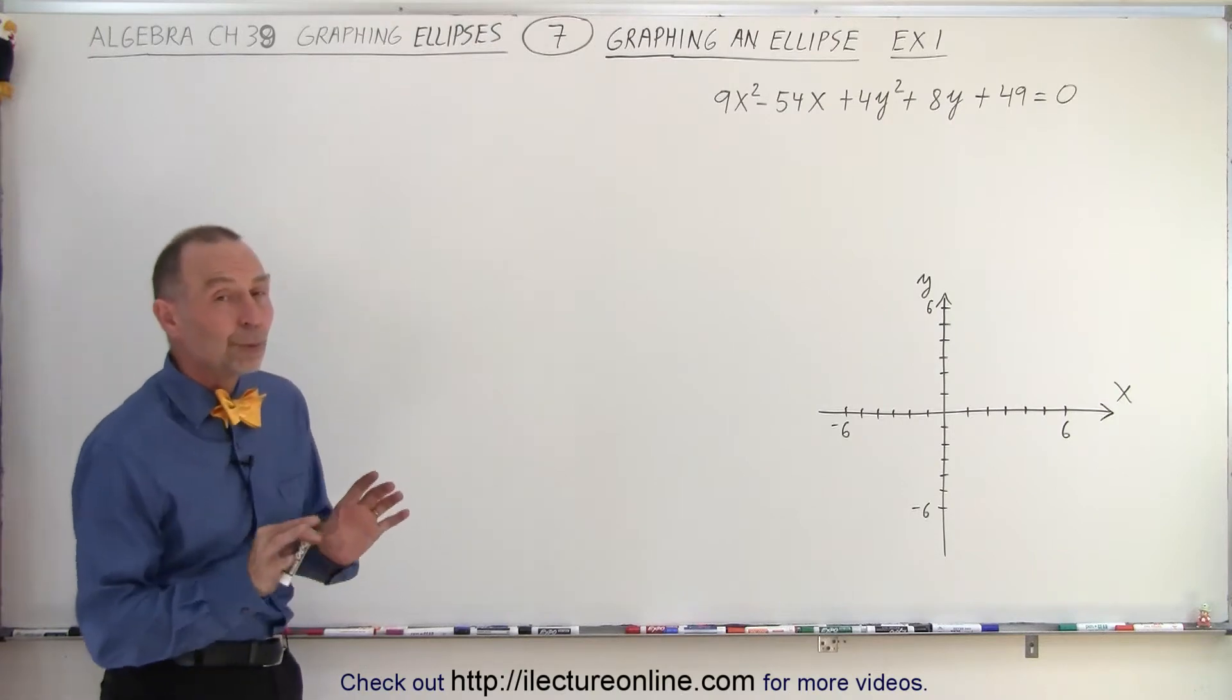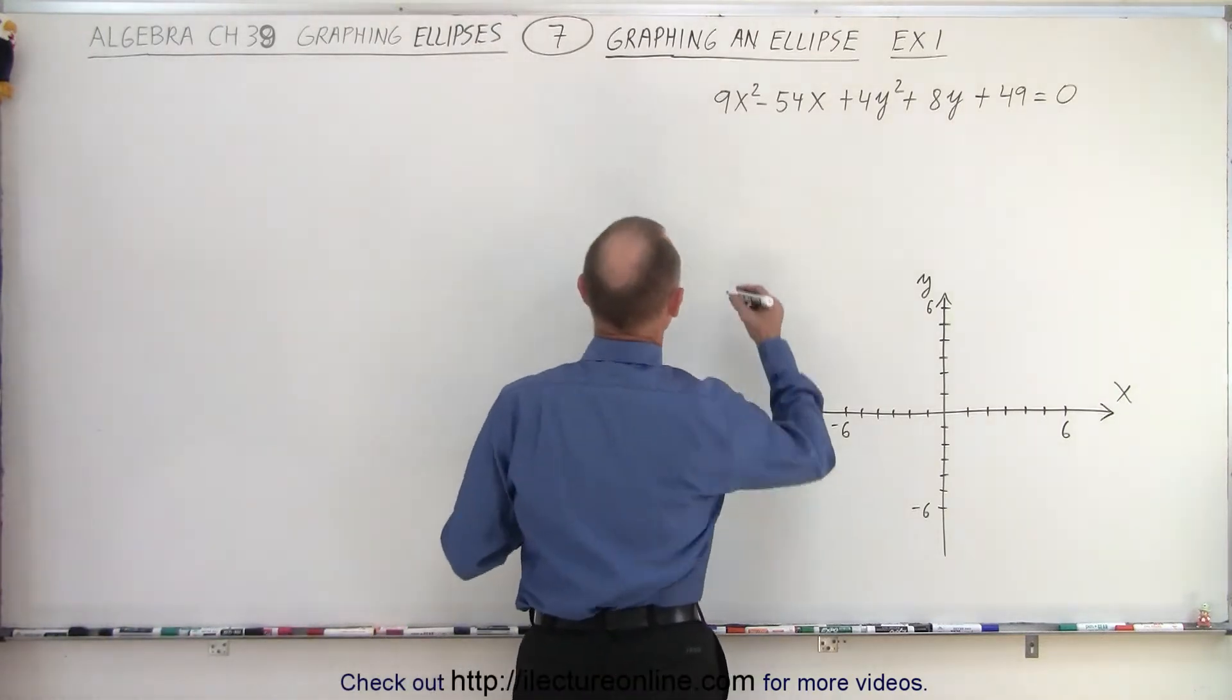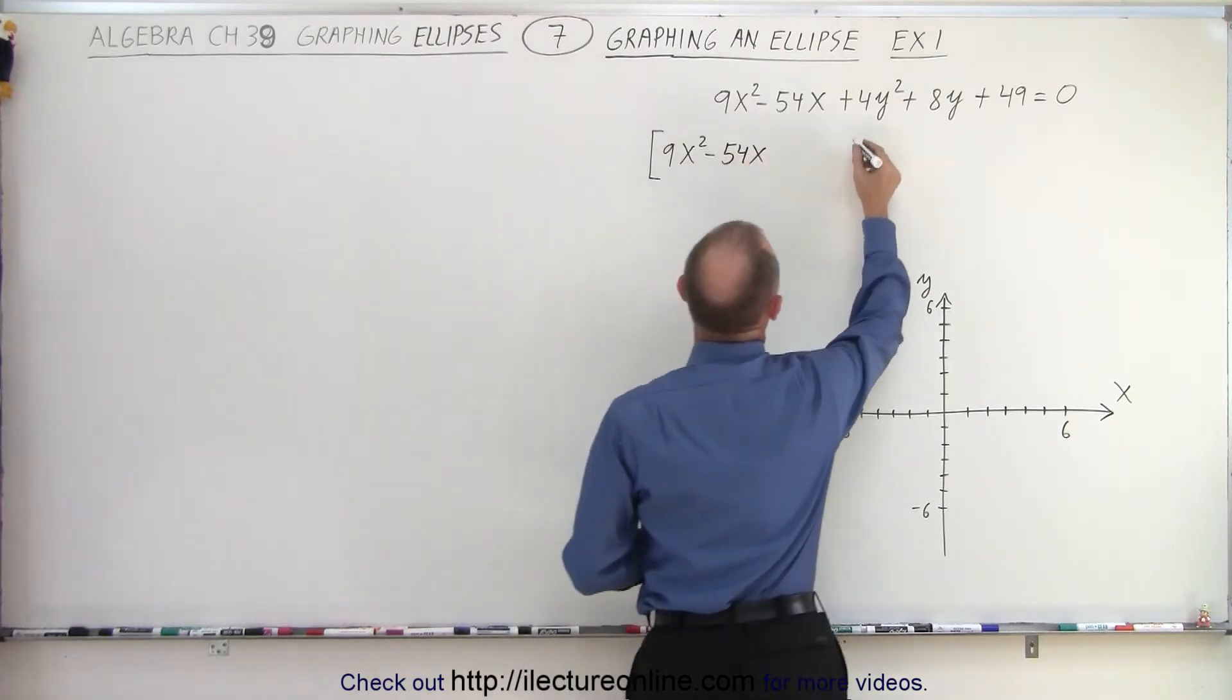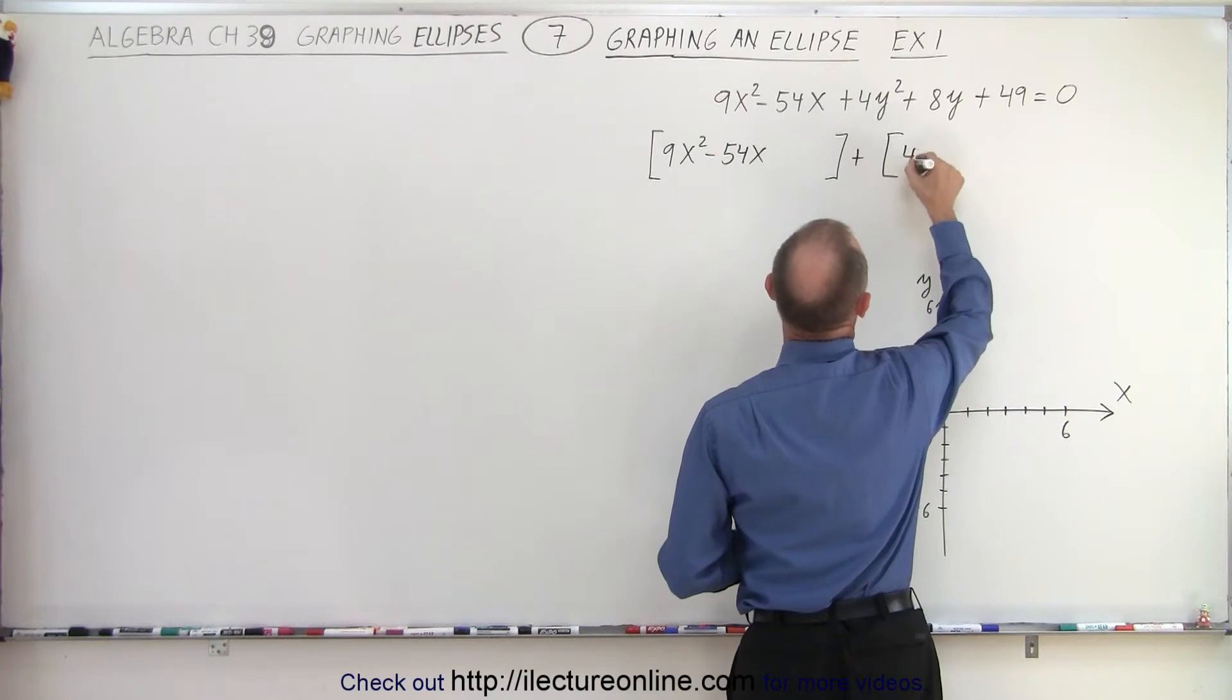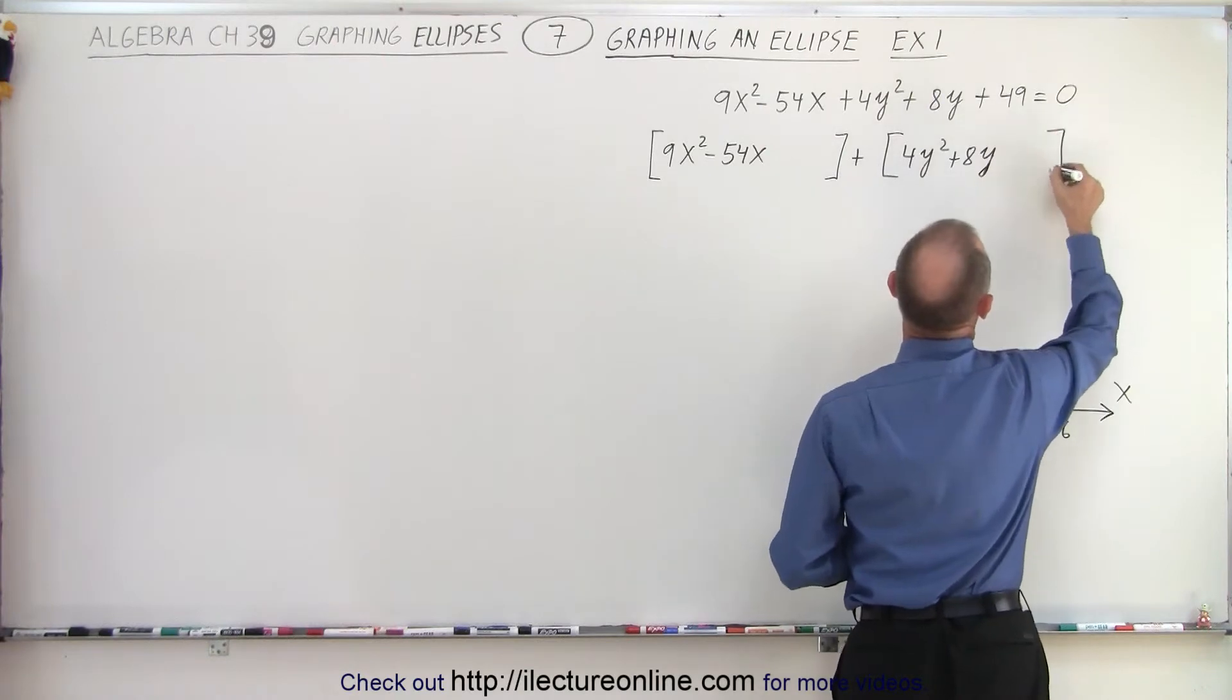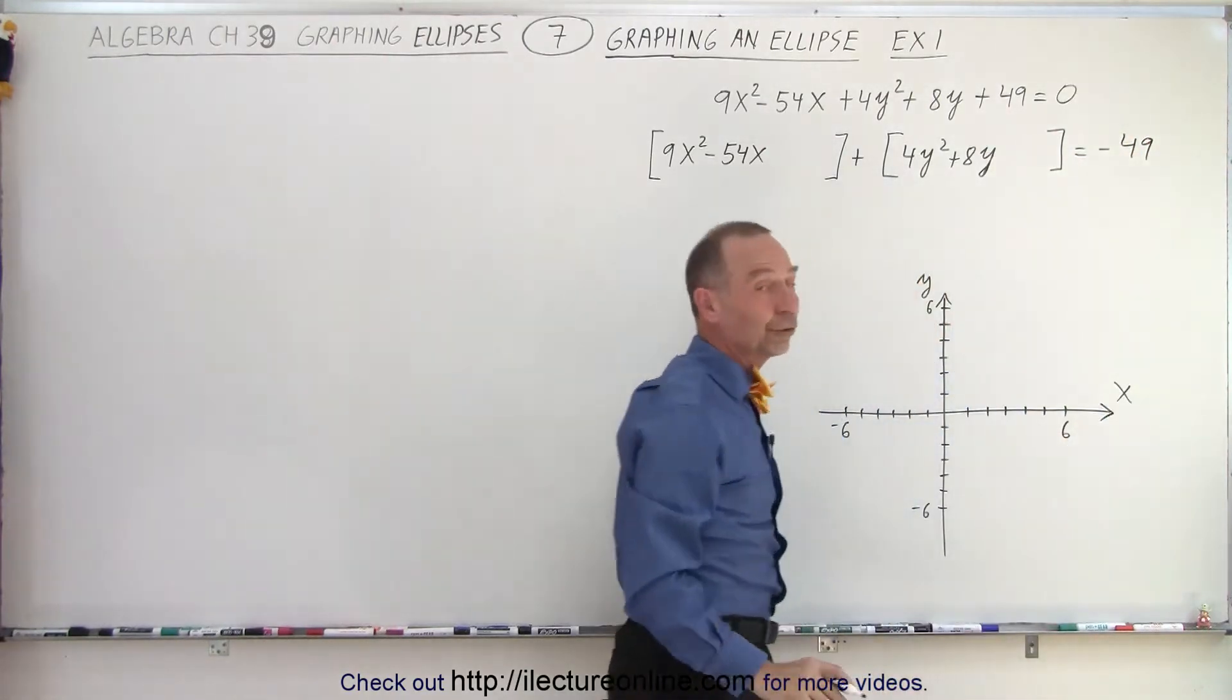First of all, we're going to rewrite this just a little bit. What we're going to do is use some brackets and write this as 9x squared minus 54x, then leave some space, plus 4y squared plus 8y, and again leave some space equals minus 49, because we want to move the 49 over to the other side.